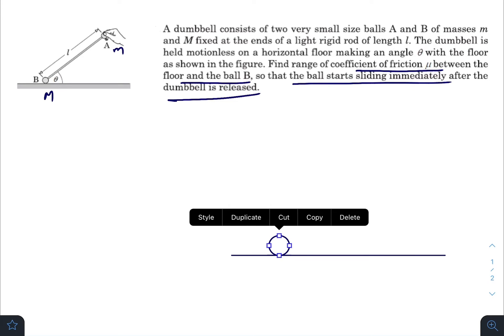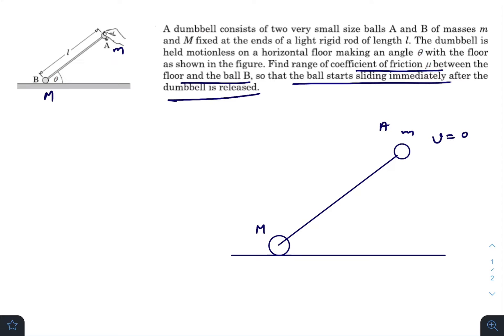Let us draw the free body diagram of the structure. So this one is capital M and the massless rod, small m. Just after releasing ball A, its speed is zero. Force is acting on both the masses. Here it will be mg.